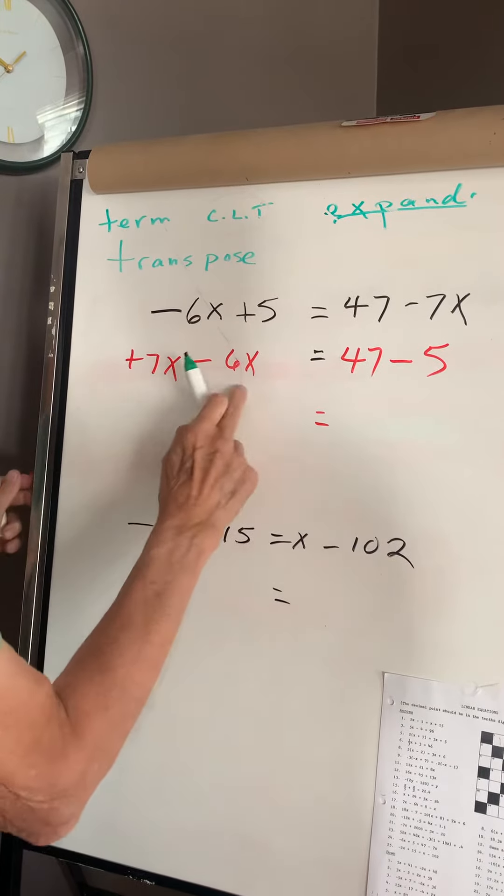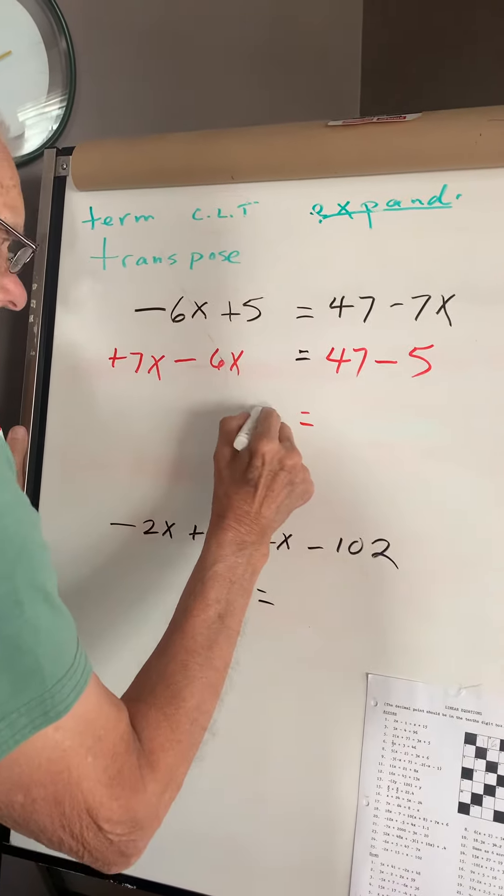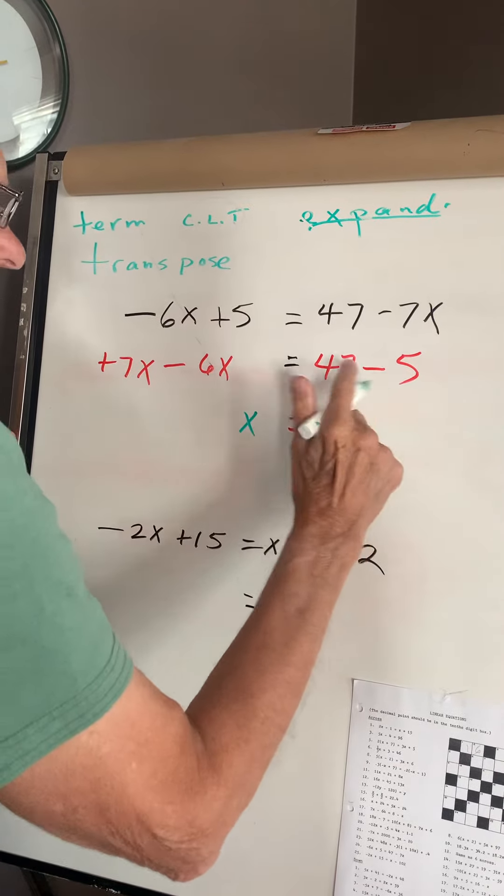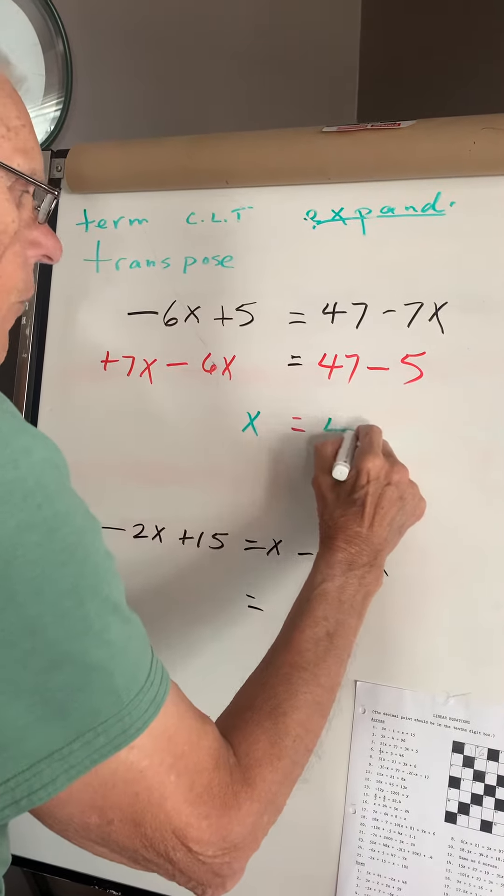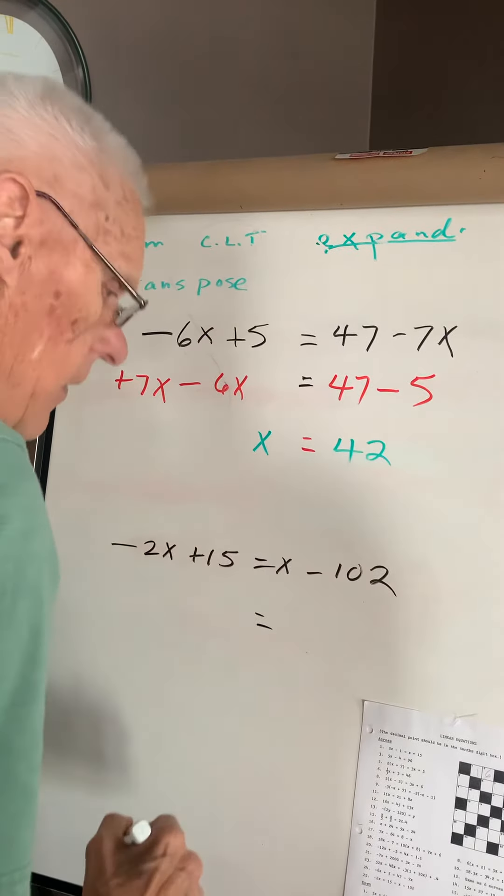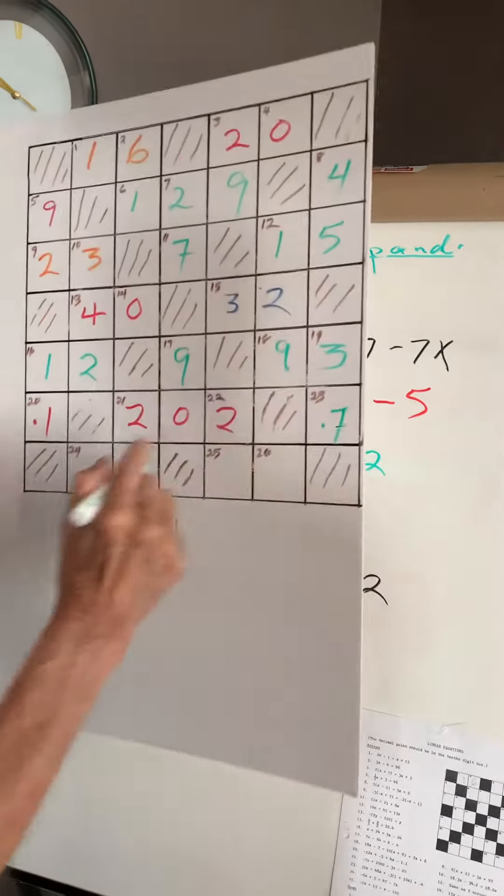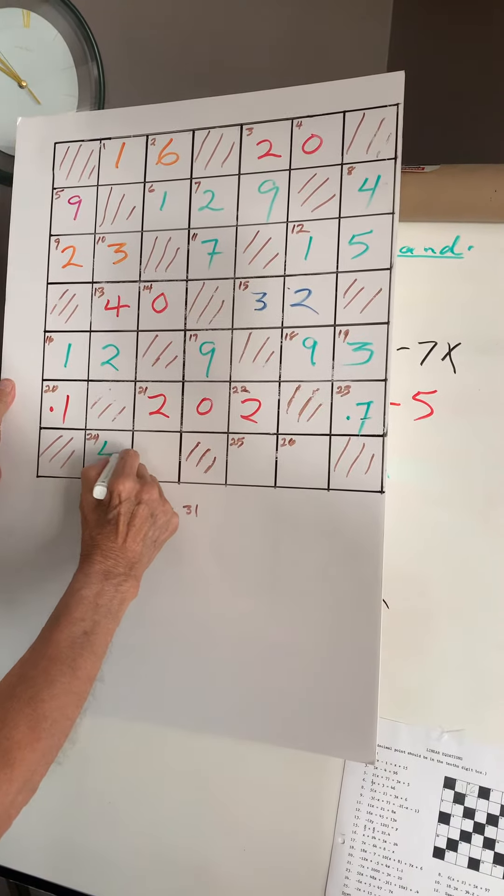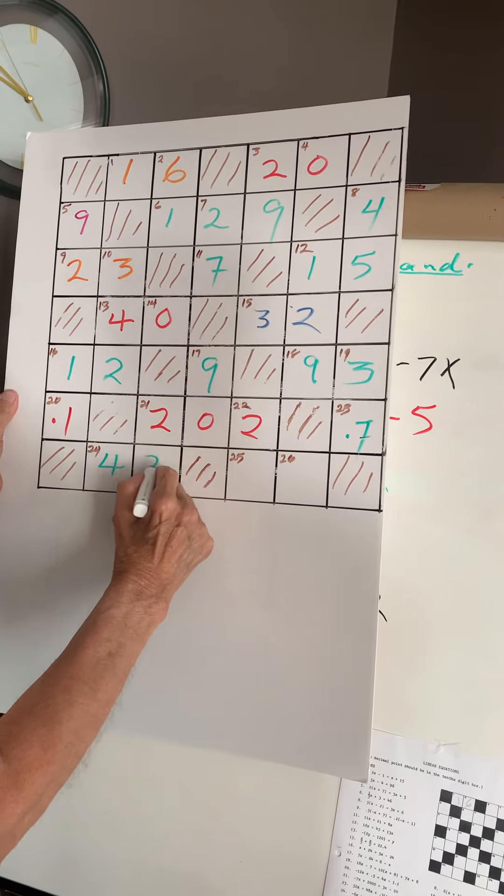Now, this will give me 1x. This here will give me 47.42. So we go down here and I will have 42 in this slot.